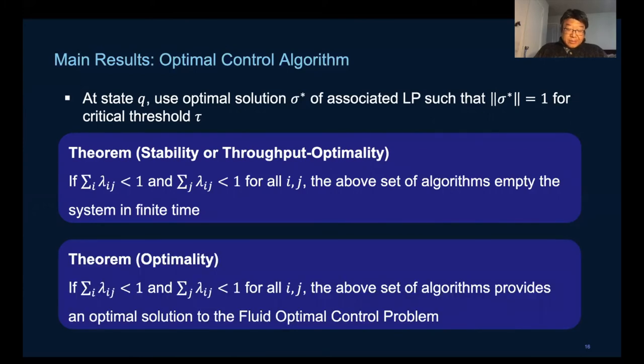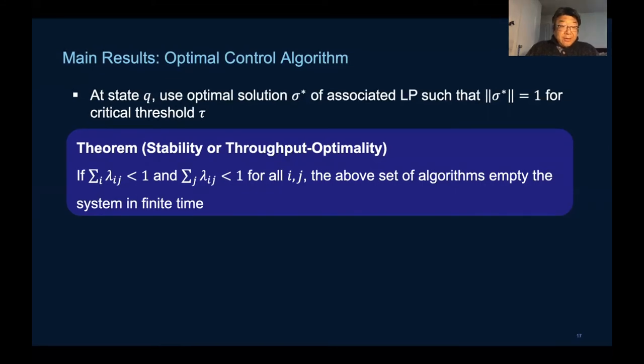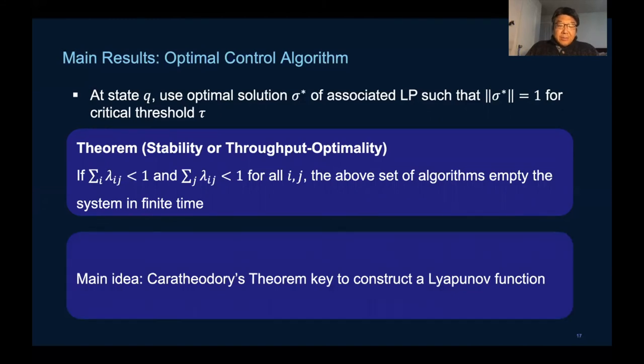Then compare that to the critical threshold which has the L1 constraint at one. One can easily see that the weighted queue length will decrease strictly for those interior points.